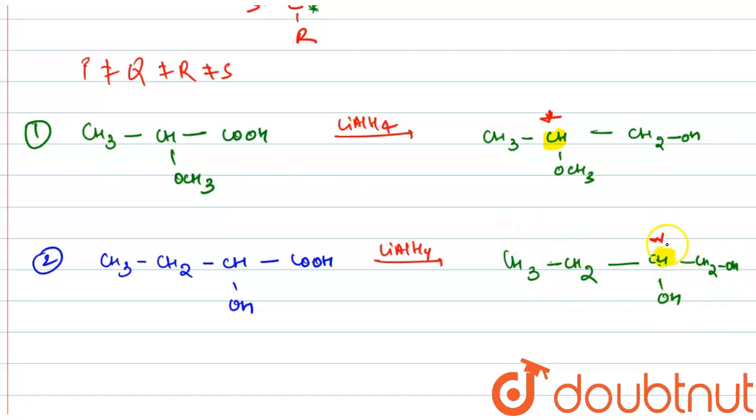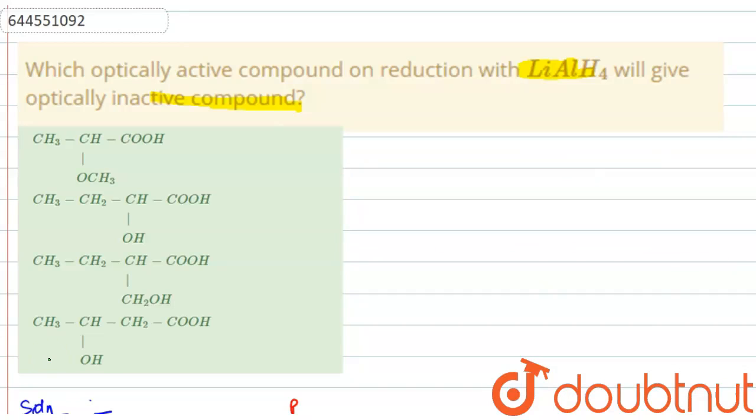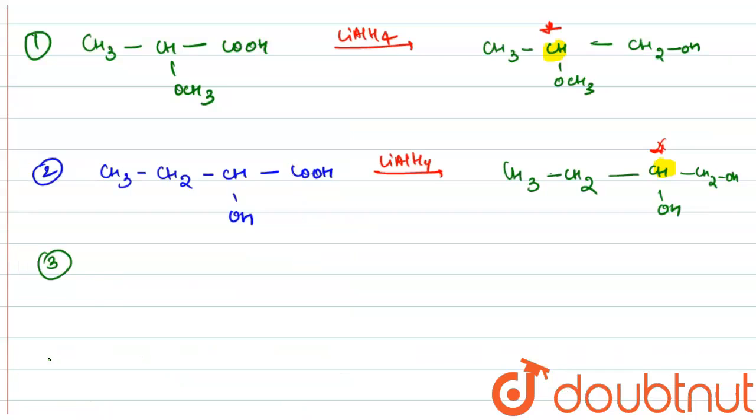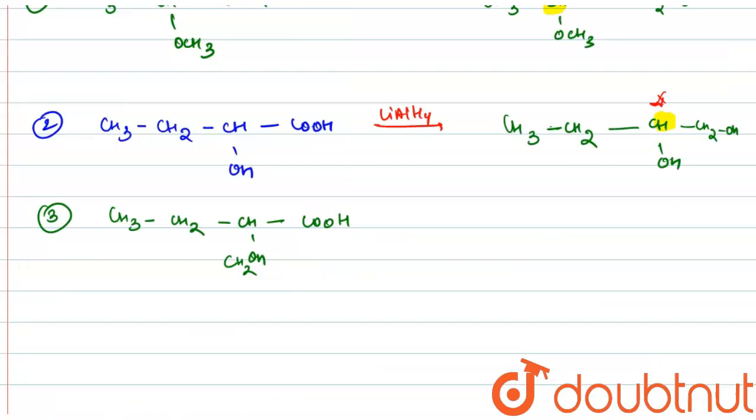Let's see the third option which is CH3-CH-CH2-CH-OH-COOH. On reacting it with LiAlH4 it will give CH3-CH2-CH2-CH-OH-CH2OH.